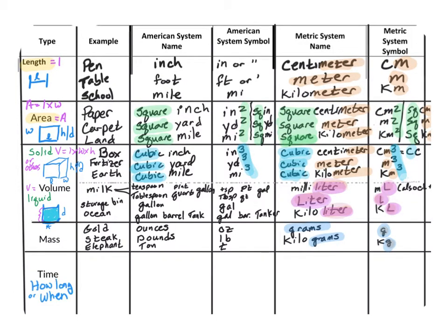Now it's time to look at time. Time measures either how long something took or when it will occur or has already occurred. Both the American and the metric system use the same basic set of units. In both cases, the base unit is the second. Although we don't really use it in the American system.